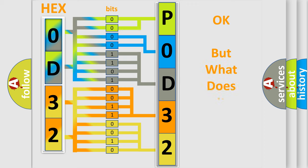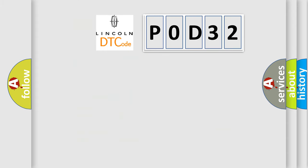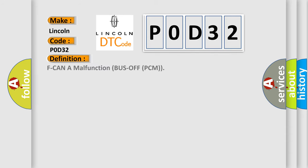We now know how the diagnostic tool translates the received information into a more comprehensible format. The number itself does not make sense to us if we cannot assign information about what it actually expresses. So, what does the diagnostic trouble code P0D32 interpret specifically for Lincoln car manufacturers? The basic definition is: F-CAN malfunction — bus off PCM. Here is a short description of this DTC code.